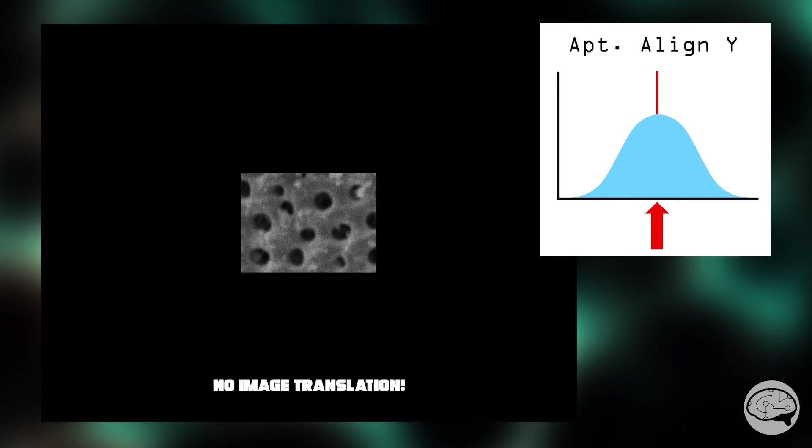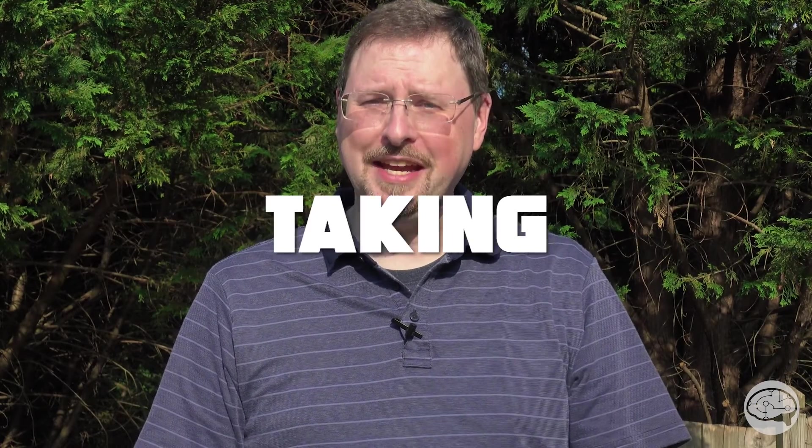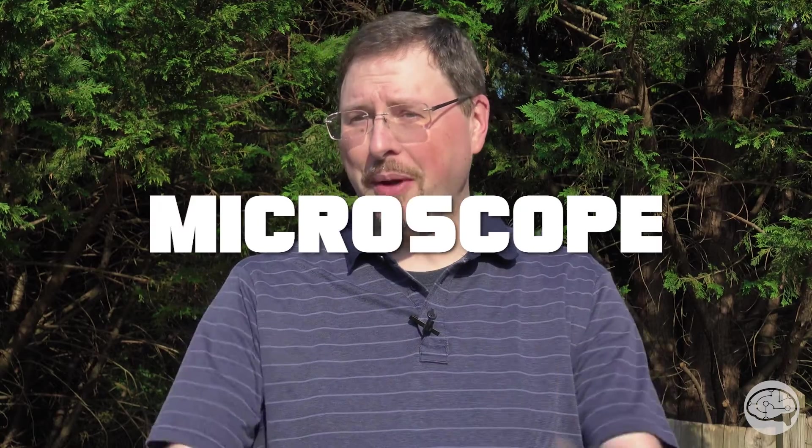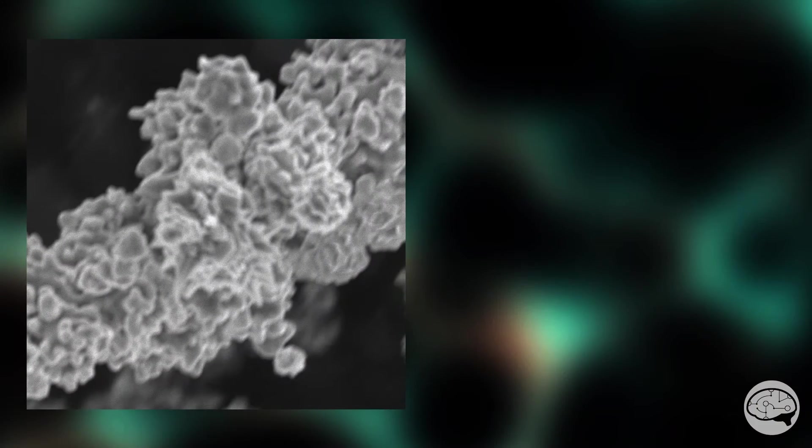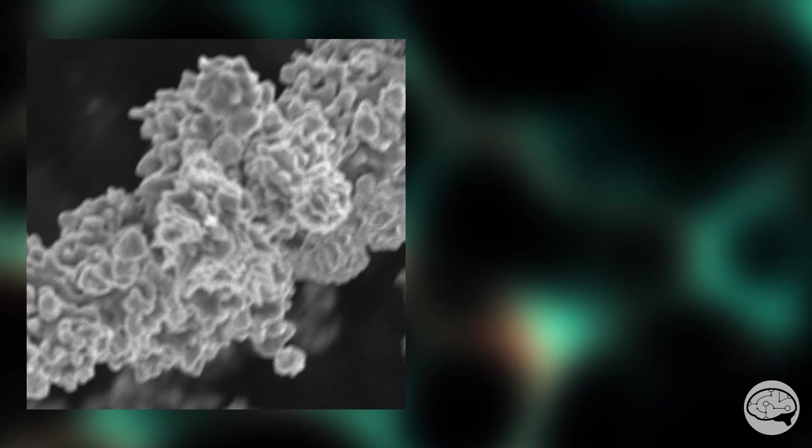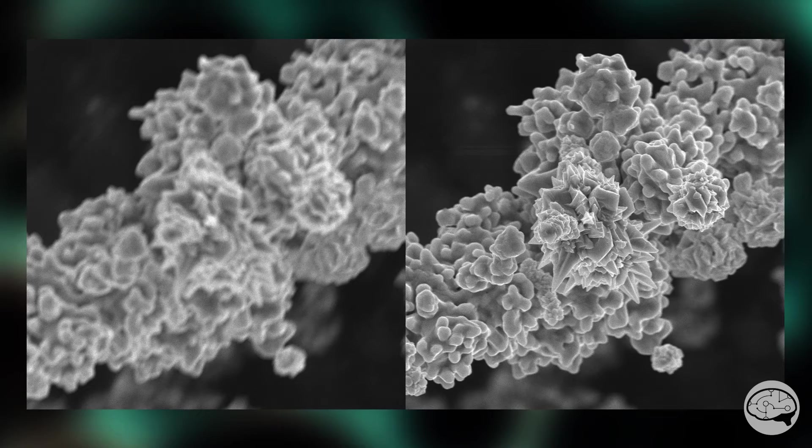Once we've stopped the image translation by adjusting the objective aperture, we need to adjust the stigmators. Now, the stigmators are the single most important thing you're going to adjust when you're taking a picture in the electron microscope, and they're more important than focus, which doesn't make any sense, but is true, and I'm going to prove it to you right now. This is an image that I captured that is perfectly in focus. This is the image I was able to capture after I adjusted the stigmators. The focus is identical between these two images, and you can see the dramatic difference. I cannot overstate the importance of proper stigmator adjustment.